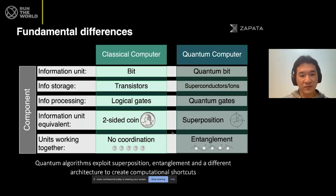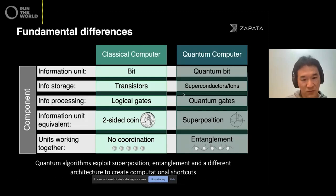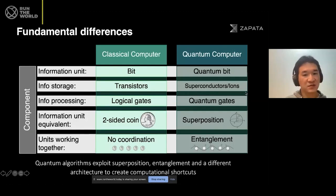So what is the difference between a classical computer and a quantum computer? They're fundamentally very different. The information unit for classical computers is the bit, and quantum computers use what's called a quantum bit, or qubit. Info storage is done by transistors in classical computers, and in quantum computers I'm mentioning superconductors and trapped ions — though there are much more to it. Many other technologies can support this. We're still seeking what the best option is.